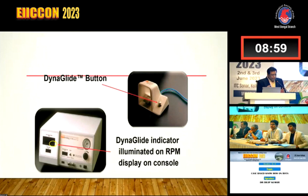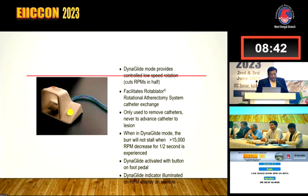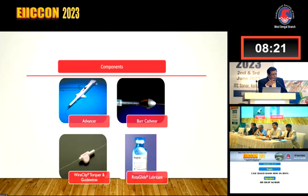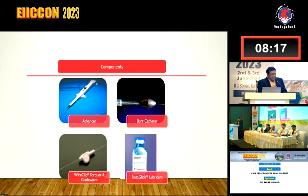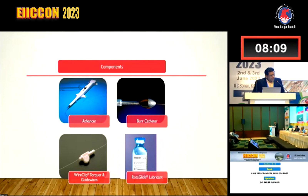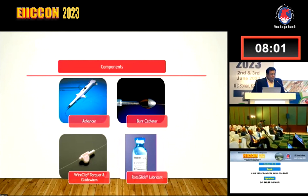Dynec glide means the rotational speed is not 150,000-170,000 - it's just half of that, about 70,000 to 90,000, so it doesn't injure the vessel. You can take out the wire after activating dynec glide mode. Some operators activate dynec glide to advance the wire when it has come inside the mid LAD, but the company discourages doing this. Dynec glide mode is always to withdraw and exchange the wire.